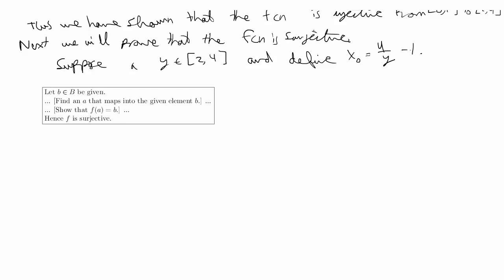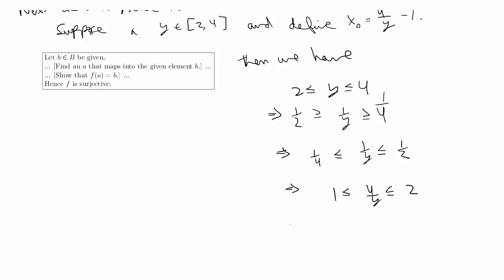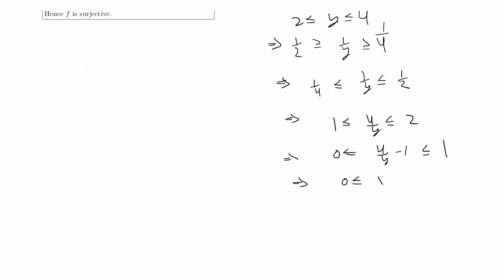Since y ∈ [2,4], we manipulate the inequality to show x₀ ∈ [0,1]. Taking the reciprocal of 2 ≤ y ≤ 4 flips the signs, then rewriting and multiplying by 4 gives 1 ≤ 4/y ≤ 2, and subtracting 1 gives 0 ≤ 4/y − 1 ≤ 1. Not surprisingly, that gives us back the domain, so x₀ = 4/y − 1 belongs to [0,1].